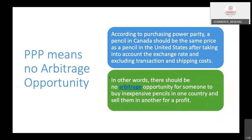Purchasing power parity means no arbitrage opportunity. Arbitrage means making a profit out of price differences in two markets. When currencies and commodities are in purchasing power parity, people have no scope for doing business through price differences and cannot make a profit. But this is only theoretical — in practice, there are price differences between wholesale and retail markets where someone can buy cheap and sell higher.